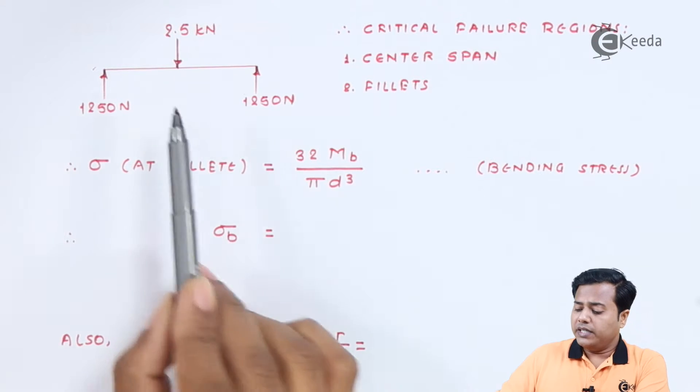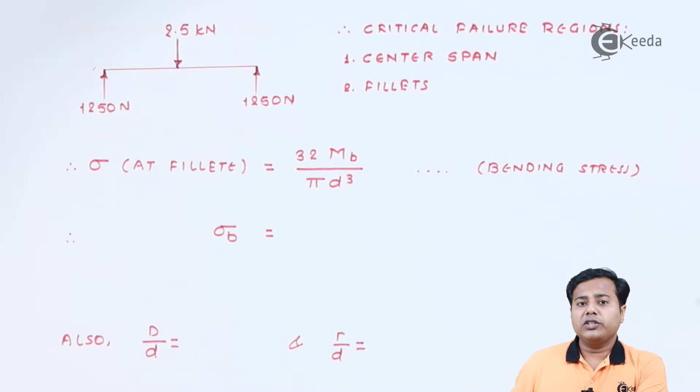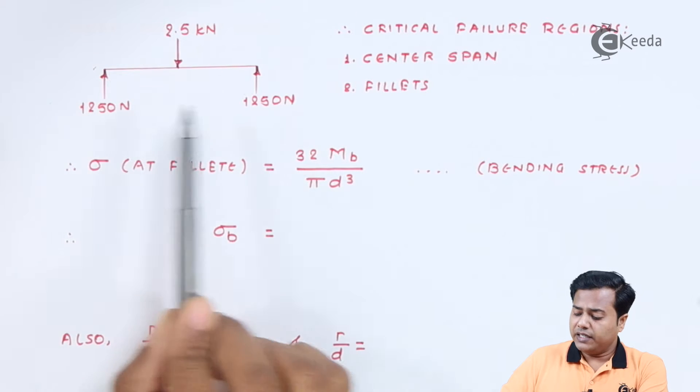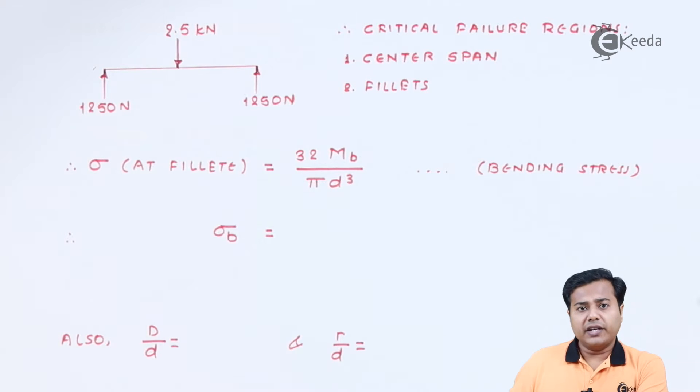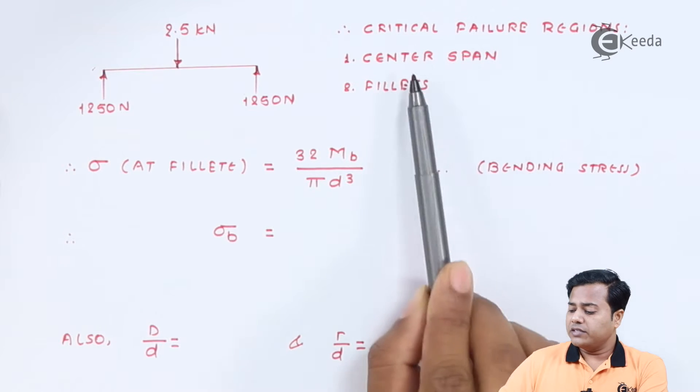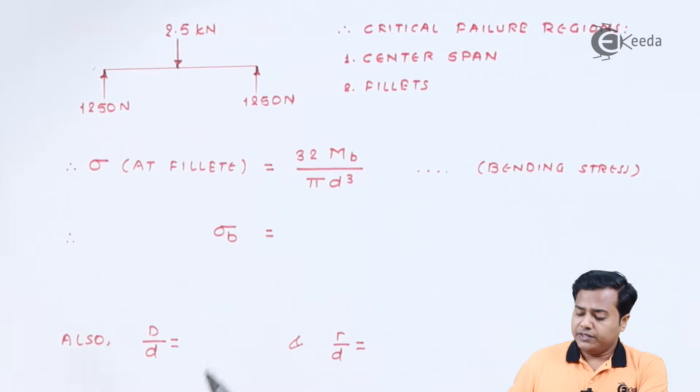Moving ahead, let us look at the beam section of this particular shaft. If it is supported by the transverse load it is very clear that two ends will have equal reactions and they will be 1250 Newton each. Therefore, as we have discussed, critical failure regions are center span and the fillets. Let us look at the fillet and find out the stress at the fillet.